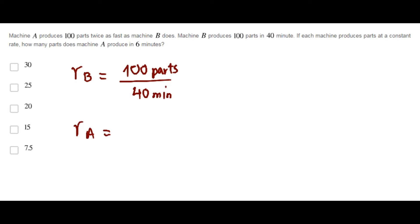Now, for the rate of machine A, they state that A produces 100 parts twice as fast as machine B does. That means that A does 100 parts in half the time, 20 minutes.